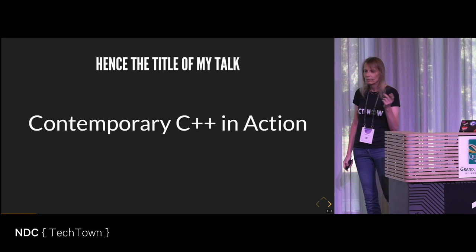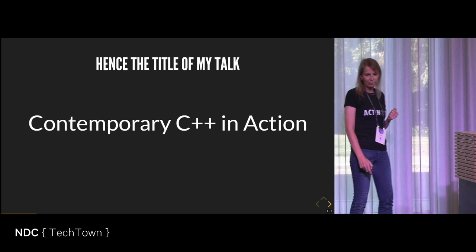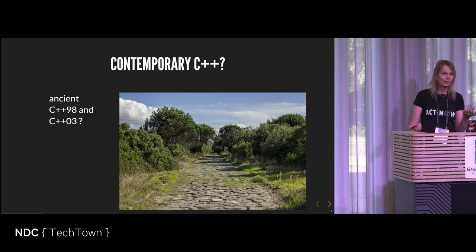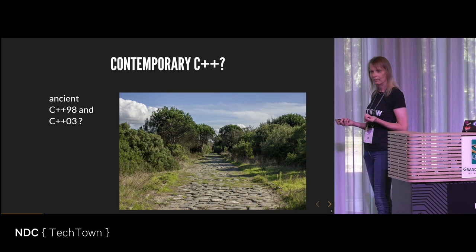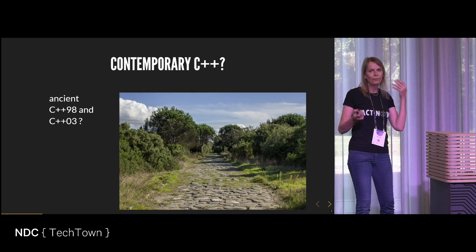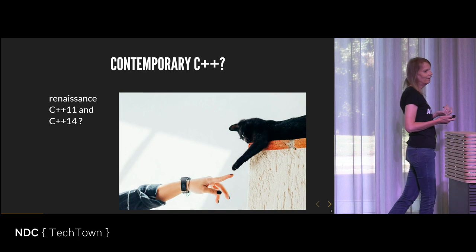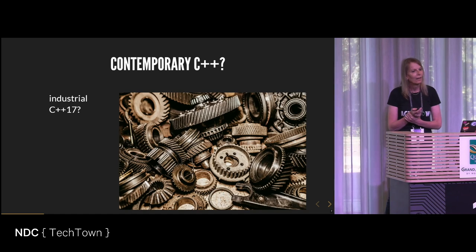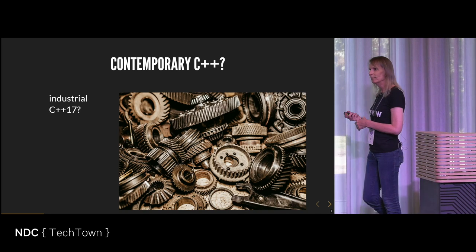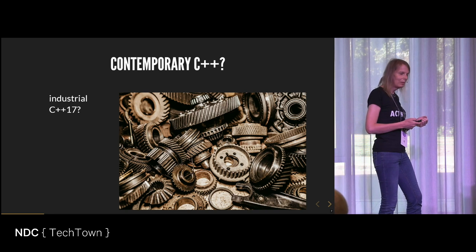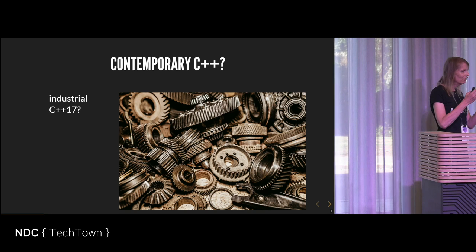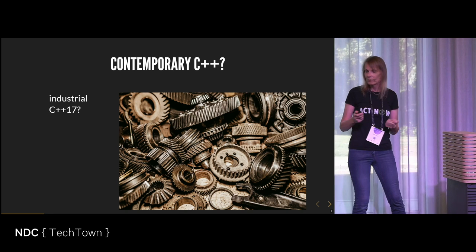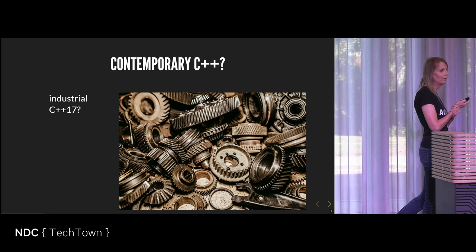This is the reason I came up with the title: Contemporary C++ in Action. What does 'contemporary' mean in this context? Is it the old trusted C++98 and C++03? Well, at least partially, because it's the fabric of our language. Or is it the renaissance C++11 or C++14? Probably yes. Or is it all the new additions from C++17 — vocabulary types like optional, variant, and what not? Maybe this is what should be considered contemporary C++.